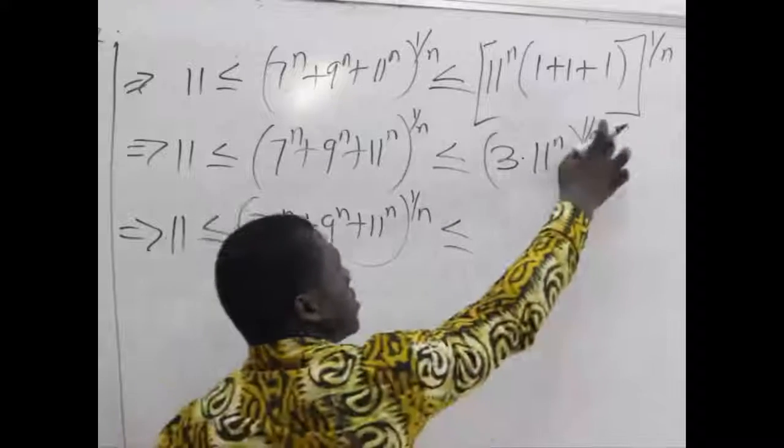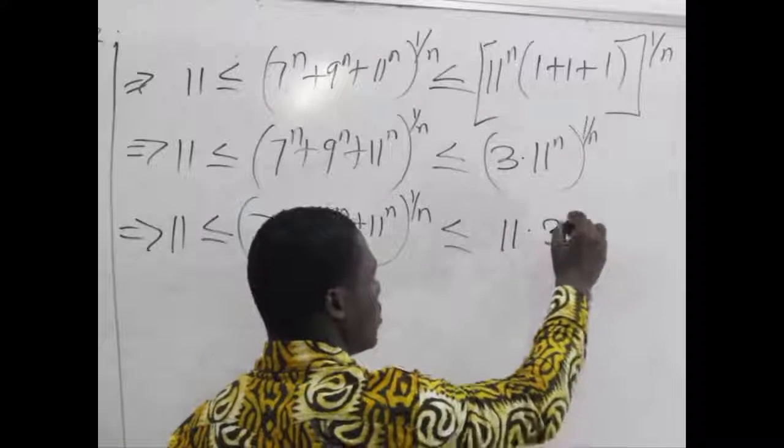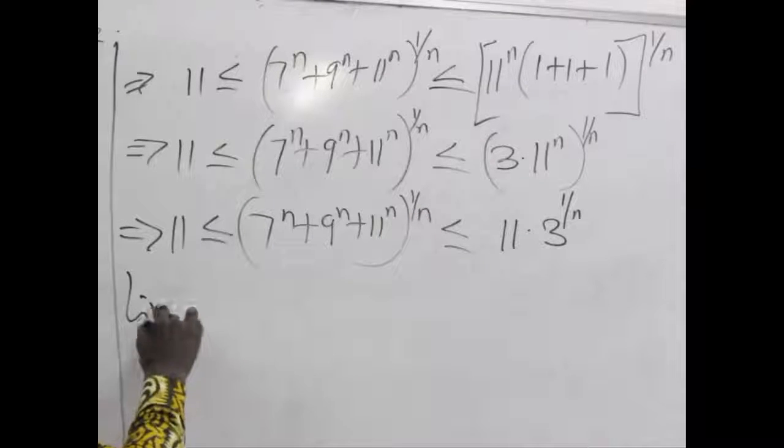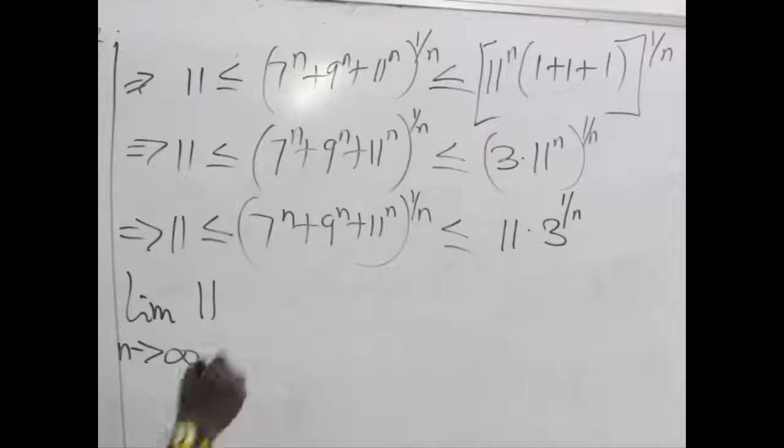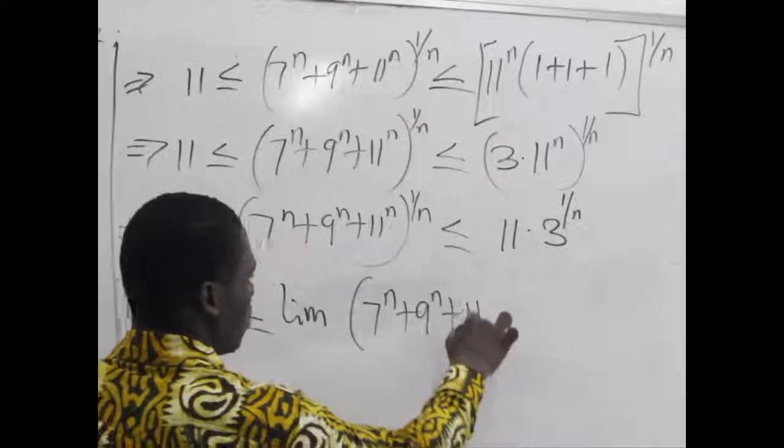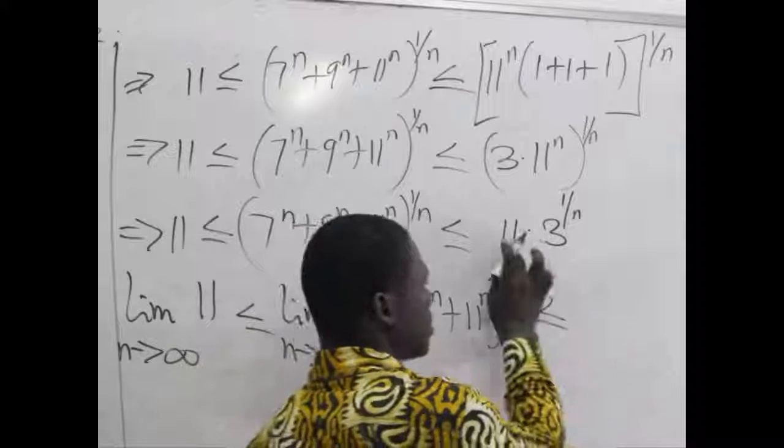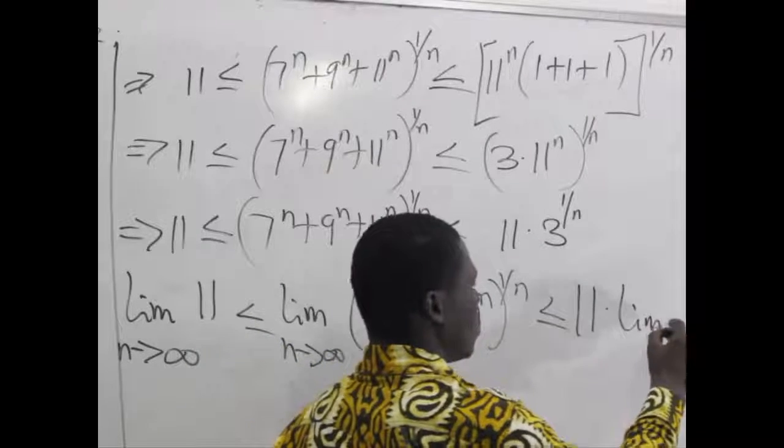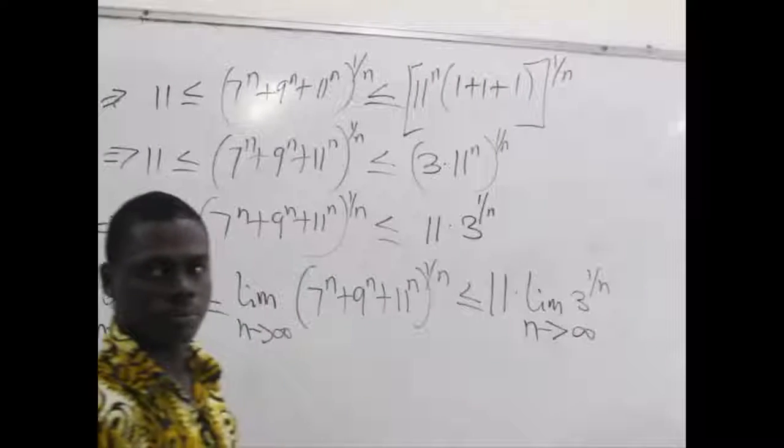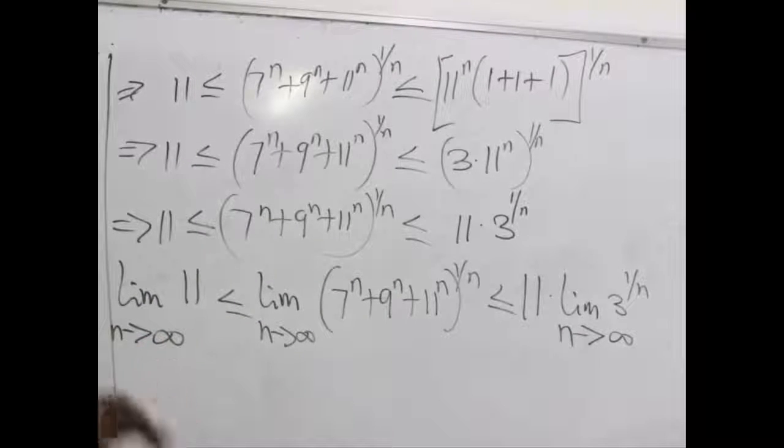At this point we find the limits. The limit of 11 as n approaches infinity should be less than or equal to the limit of our expression as n approaches infinity, which should be less than or equal to the limit of (3·11^n)^(1/n) as n approaches infinity.